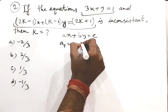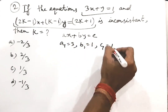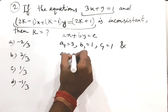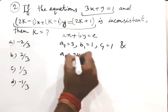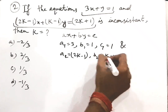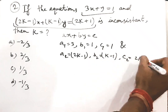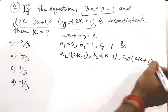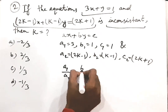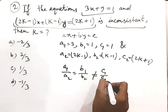So a1 equals 3, b1 equals 1, and c1 equals 1. Also a2 equals 2k minus 1, b2 equals k minus 1, and c2 equals 2k plus 1. For inconsistency, the condition is a1 by a2 equals b1 by b2, not equal to c1 by c2.